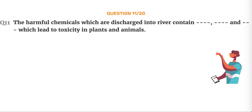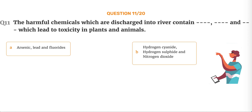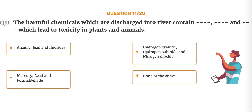Question number 11. The harmful chemicals discharged into rivers contain dash and dash, which lead to toxicity in plants and animals. Option A, Arsenic, lead and fluorides. Option B, Hydrogen cyanide, hydrogen sulfide and nitrogen dioxide. Option C, Mercury, lead and formaldehyde. Option D, None of the above.